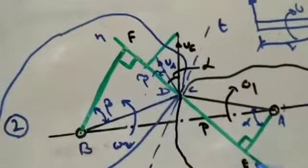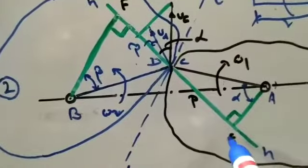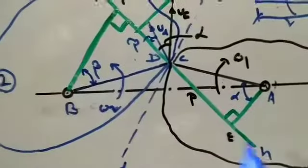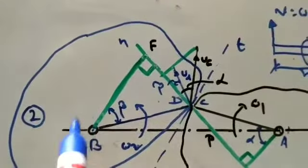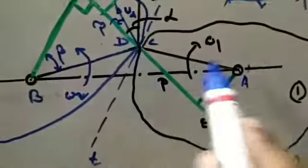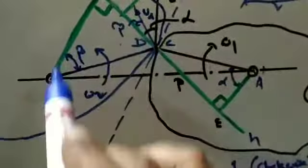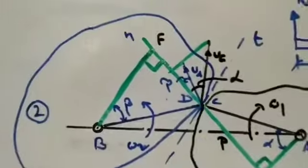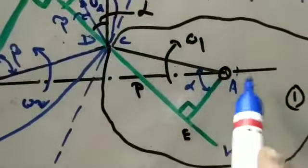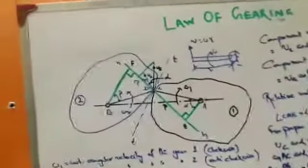We drop a perpendicular from A to the common normal NN at point E, and from B to the common normal at point F. The angle CAE will invariably be α, and the angle DBF will invariably be β.